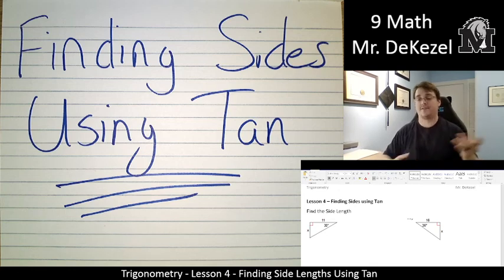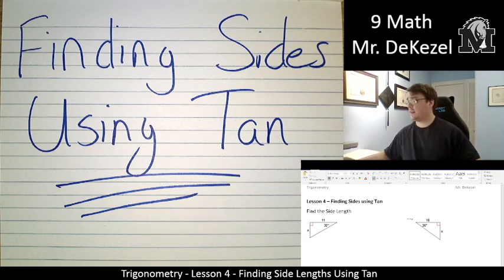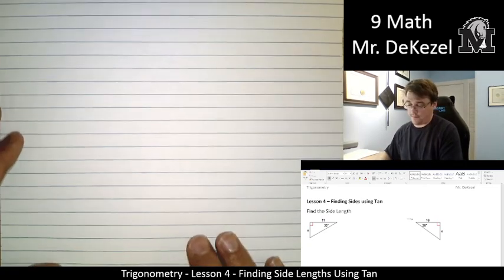We're going to actually find sides using tan. So we're going to go through the steps of side identification and angle of interest. It's going to be tan. I'm going to show you how to use it and punch it into your calculator. Let's go to the first problem.